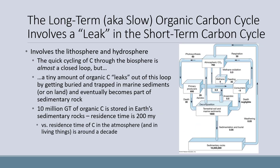We are going to start the long-term carbon cycle off by talking about the organic component. Here is a box model showing the carbon cycle on Earth. The long-term organic carbon cycle actually involves a leak in the short-term carbon cycle. This leak has to do with the lithosphere and the hydrosphere. The quick cycling of carbon through the biosphere is almost a closed loop, but a tiny amount of organic carbon leaks out by getting buried and trapped in marine sediments or on land.